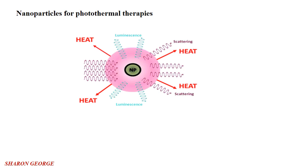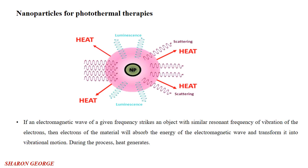When light rays interact with nanoparticles, many phenomena will happen — luminescence, either fluorescence or phosphorescence, and some scattering. The heat produced during the exposure time, based on that exposure time and exposure power, is used to treat the particular malignant cell.